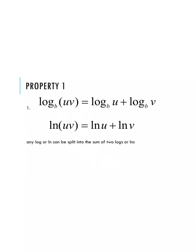Our first property helps us expand logs. If we had an expression log base b of u times v, we can rewrite that as log base b of u plus log base b of v. When you're multiplying two separate terms together, we expand that as adding the terms. It works the same way for natural log: the natural log of u times v splits up as the natural log of u plus the natural log of v.